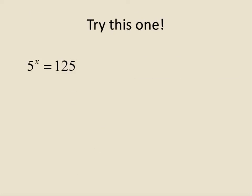Try this one out. Pause the recording. Go ahead and try and solve this one. 5 to the power of x equals 125. Tell me what x is equal to. 5 to the power of 1 is 5. 5 to the power of 2 is 25. And 5 to the power of 3 is 125, because 5 times 5 times 5 is 125. So therefore, in this one, x is equal to 3.